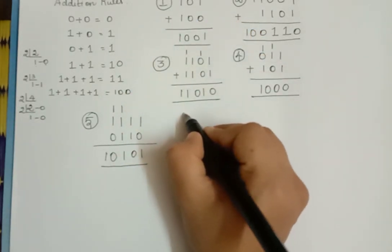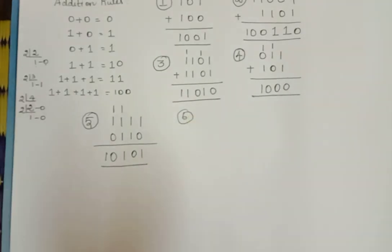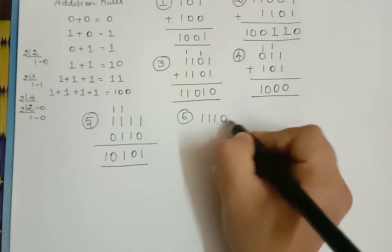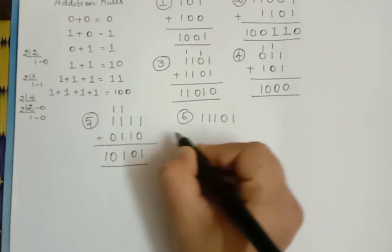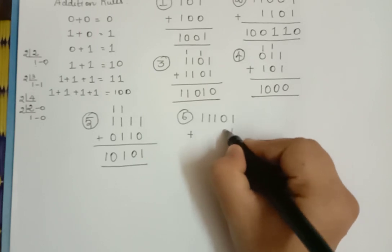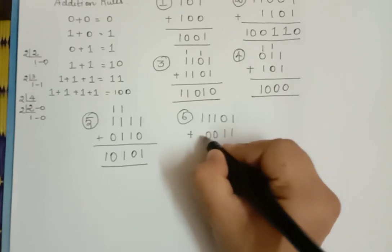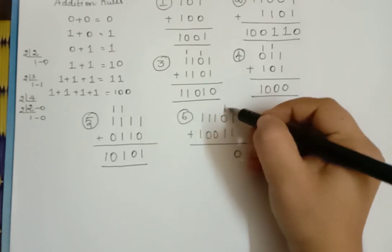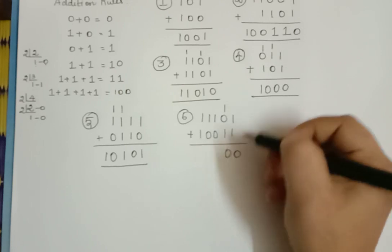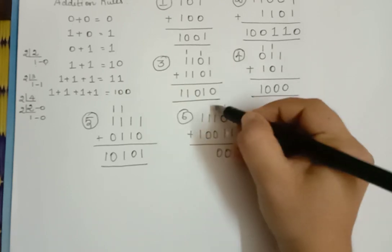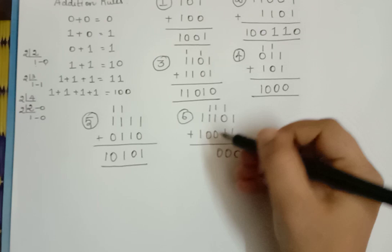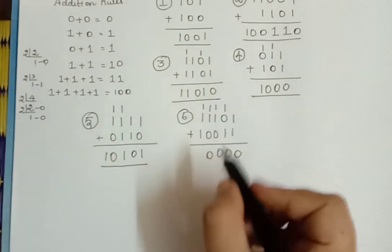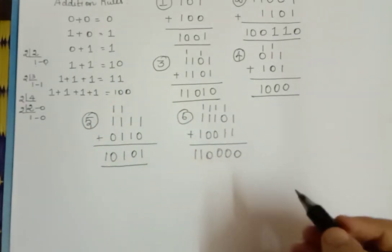Now let us take one more problem: 11101 added with 11001. So 1 plus 1 is 0 with a carry over of 1. Then 1 plus 1 is 0 with a carry over of 1. Then 1 and 0, 1 and 1 gives 0, 1. Here you have 1 plus 1 plus 1 which is 11. So the number here is 11.